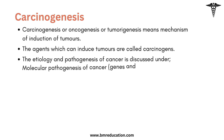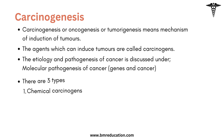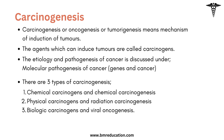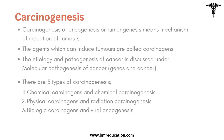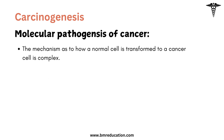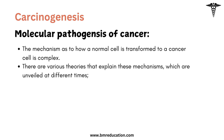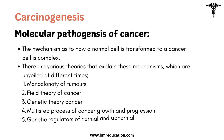Next, we will discuss about the etiology, pathogenesis, and types of carcinogenesis. The mechanism as to how a normal cell is transformed to a cancer cell is complex. There are various theories that explain these mechanisms.